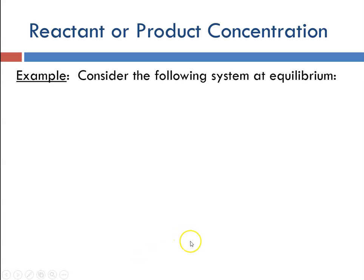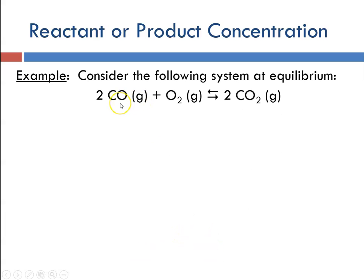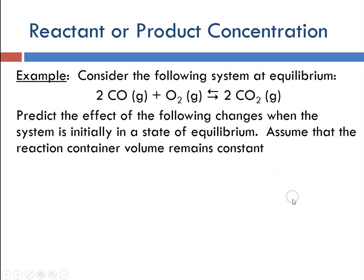Here's an example. Consider the following system at equilibrium: carbon monoxide plus oxygen to produce carbon dioxide. Predict the effect of the following changes when the system is initially at equilibrium, and assume that the reaction container volume is constant.